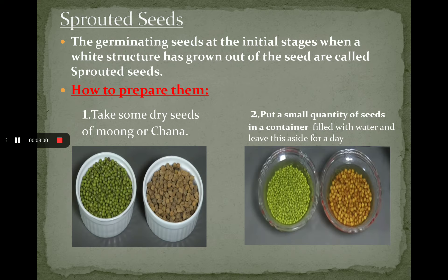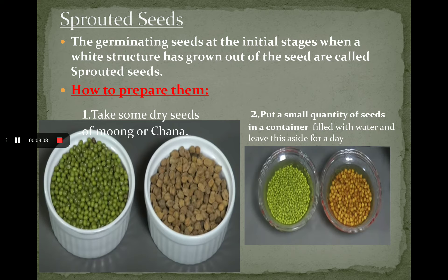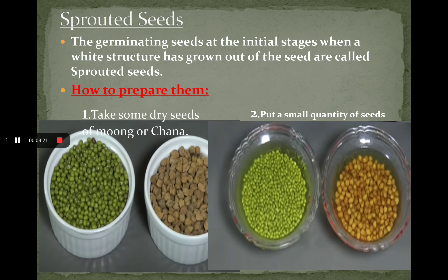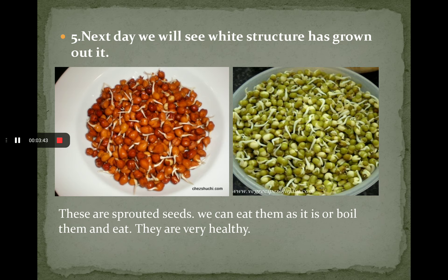There are some steps. In the first step, we take some dry seeds of moong or chana, as you can see in the image. In the second step, we put the seeds in a container filled with water and leave aside for a day. In the third step, we drain out the water completely and leave the seeds in the vessel for a day. In the fourth step, we wrap the seeds with a wet cloth and set aside. In the next step, we will see that a white structure has grown out of the seed. This white structured seed is called a sprouted seed, as you can see in the images.